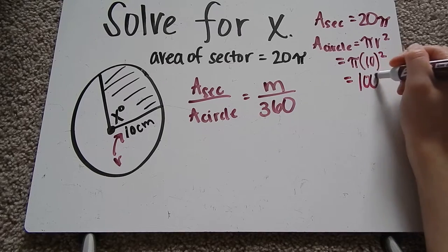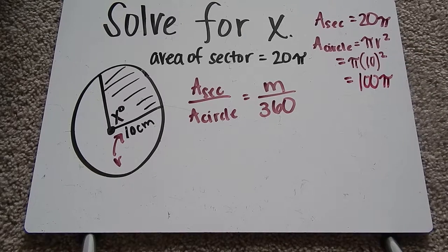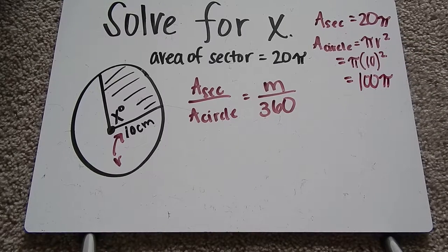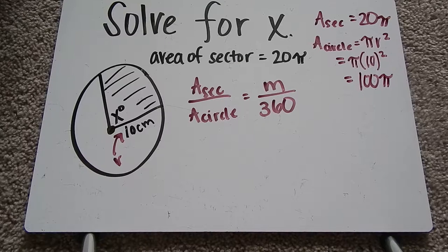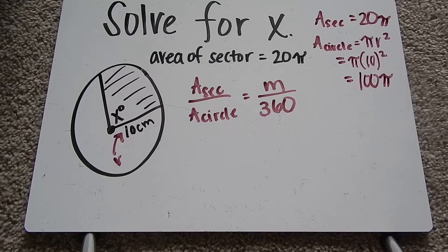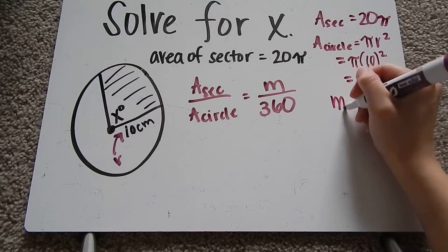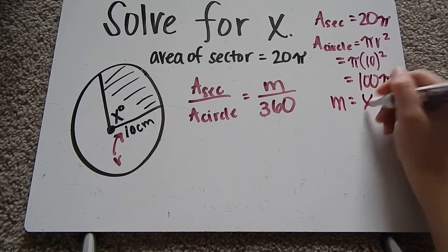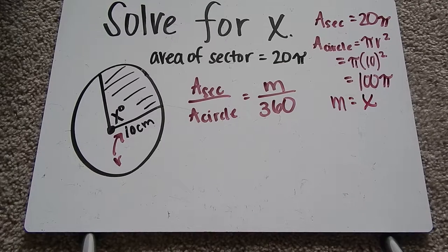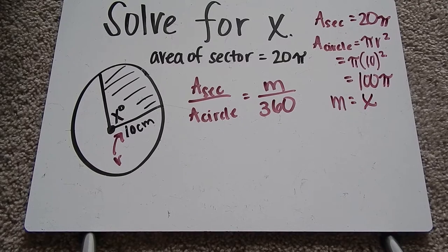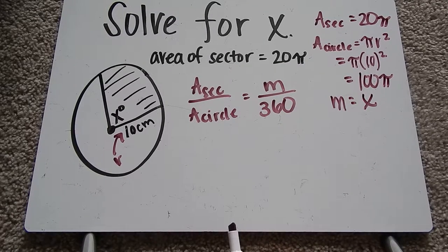10 squared is 100, so it's going to be 100π. Usually you don't see it written π 100, which is why I moved the π to the end. Okay, so that's our area of the circle. And then we also need M. M in this case is x. I don't know it. I'm trying to solve for it. So now let's go ahead and write in what we know.